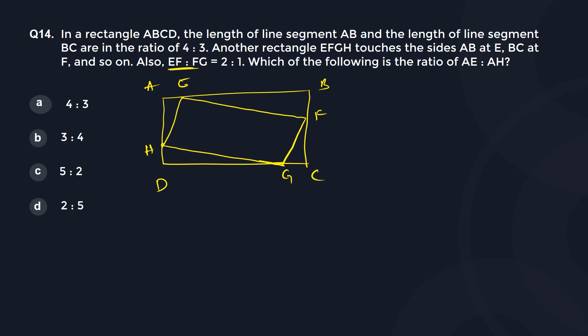Now it is given to us that EF and FG are in the ratio 2 is to 1. So if I take this as 2x, then this will be x.